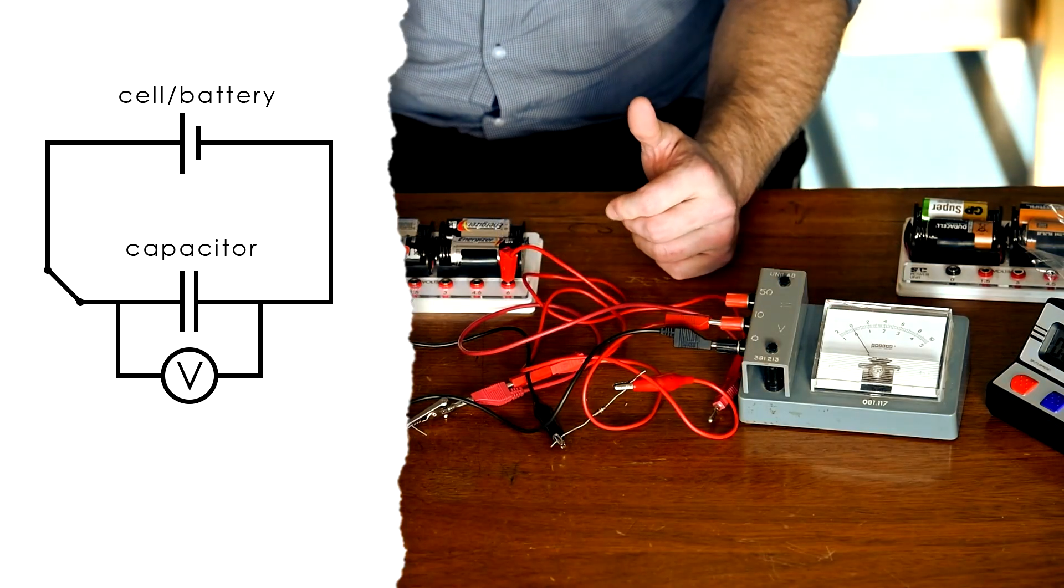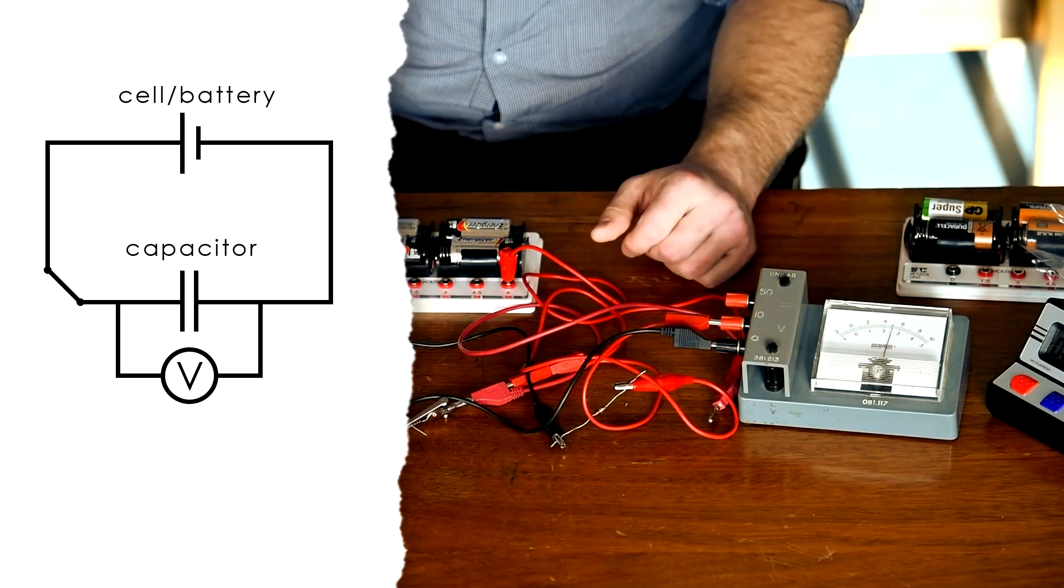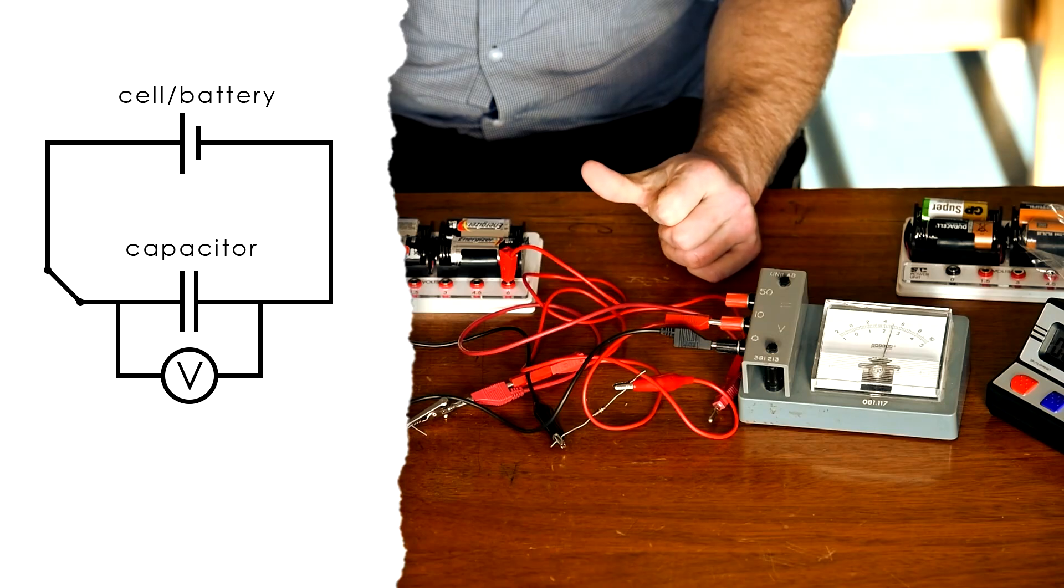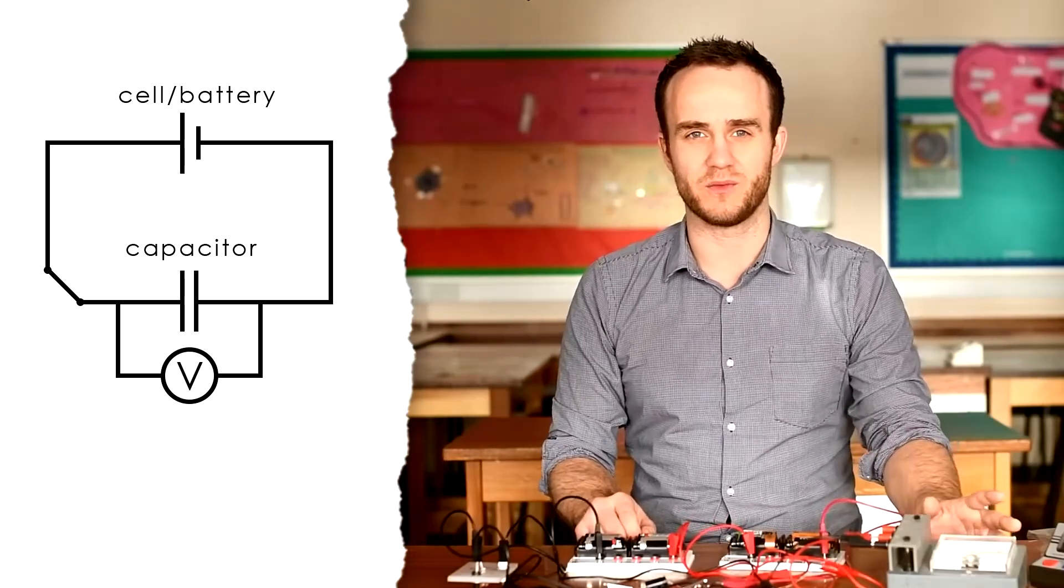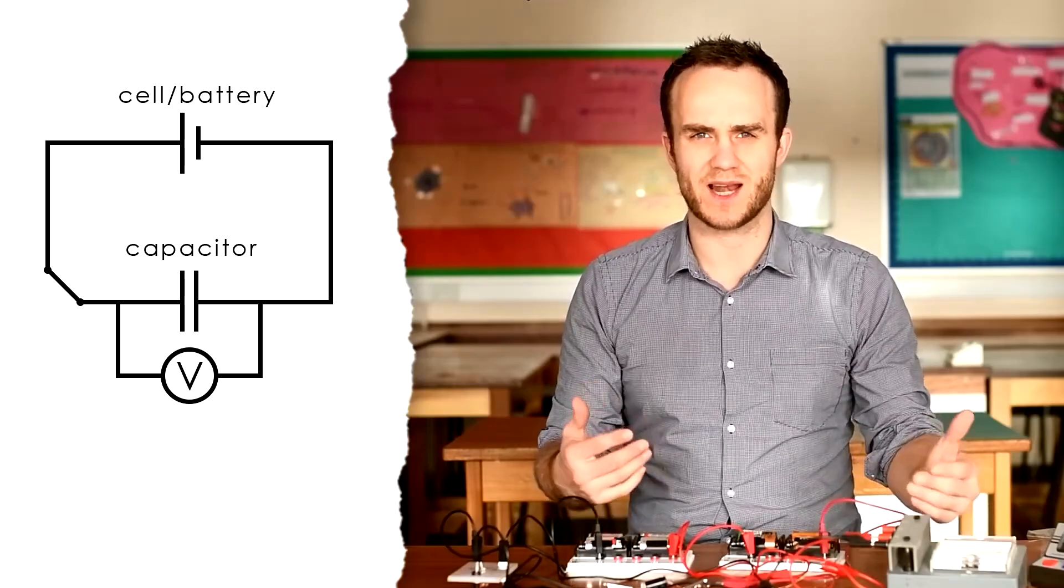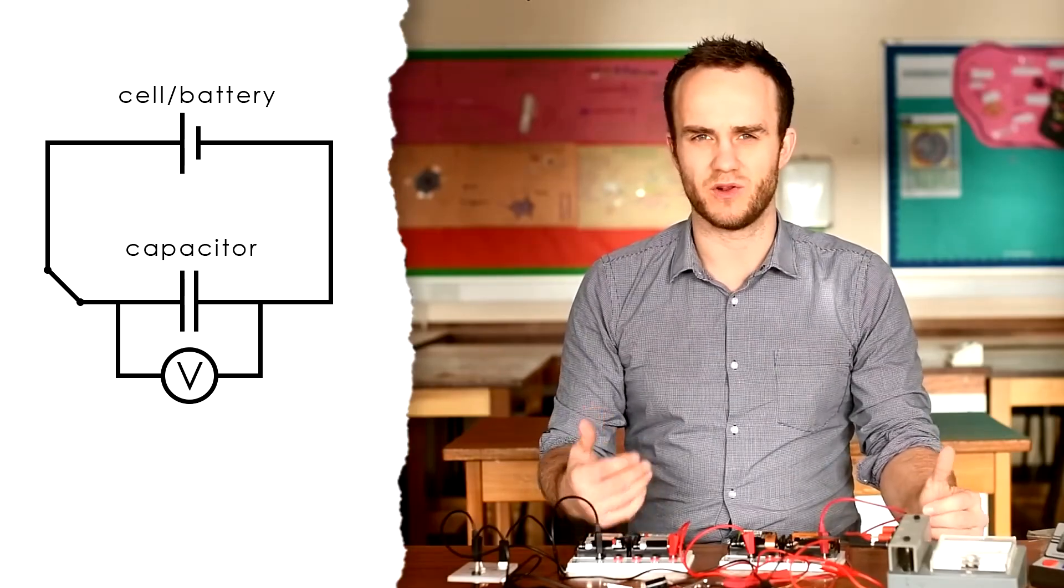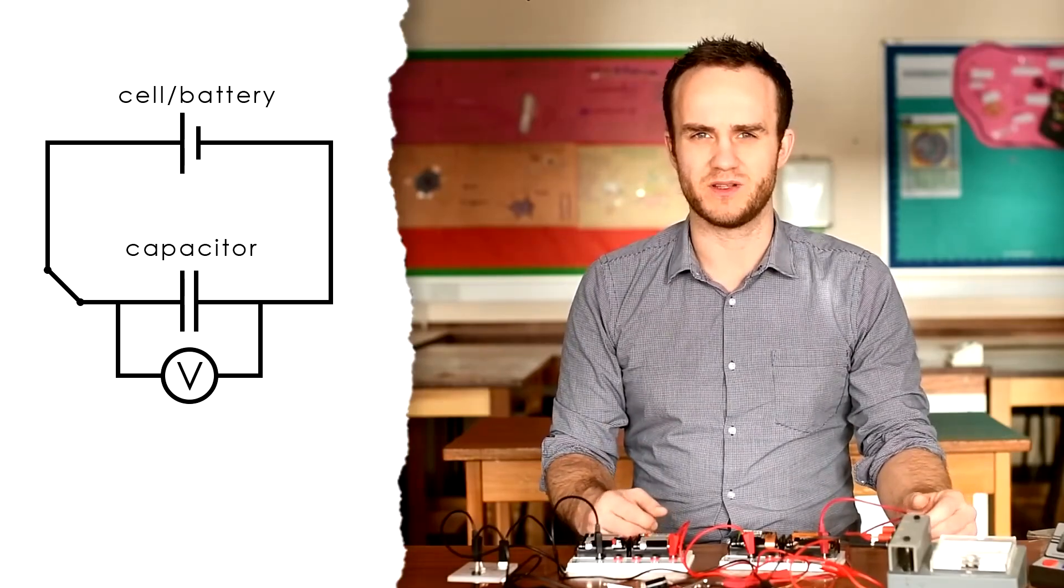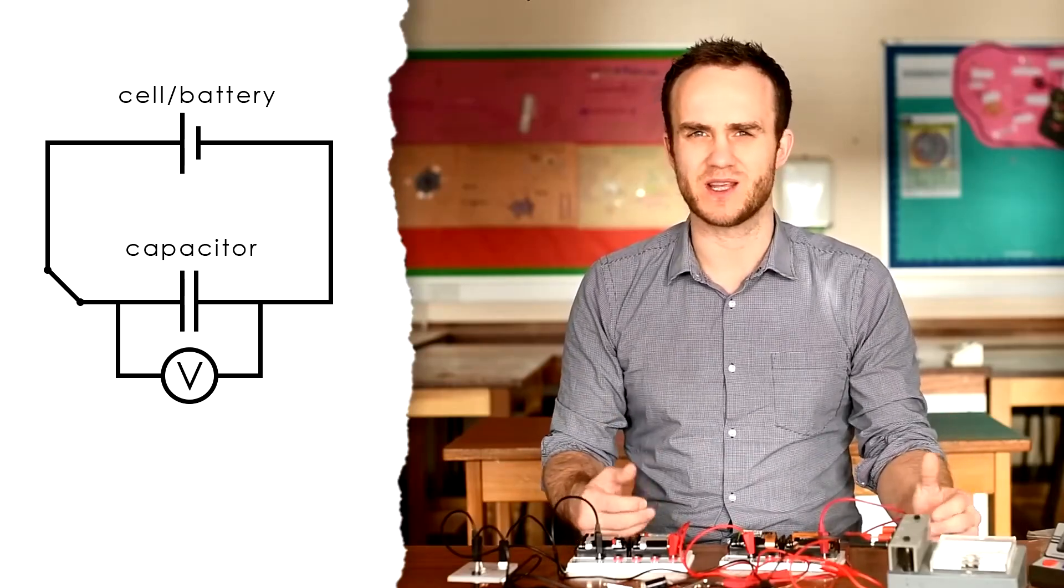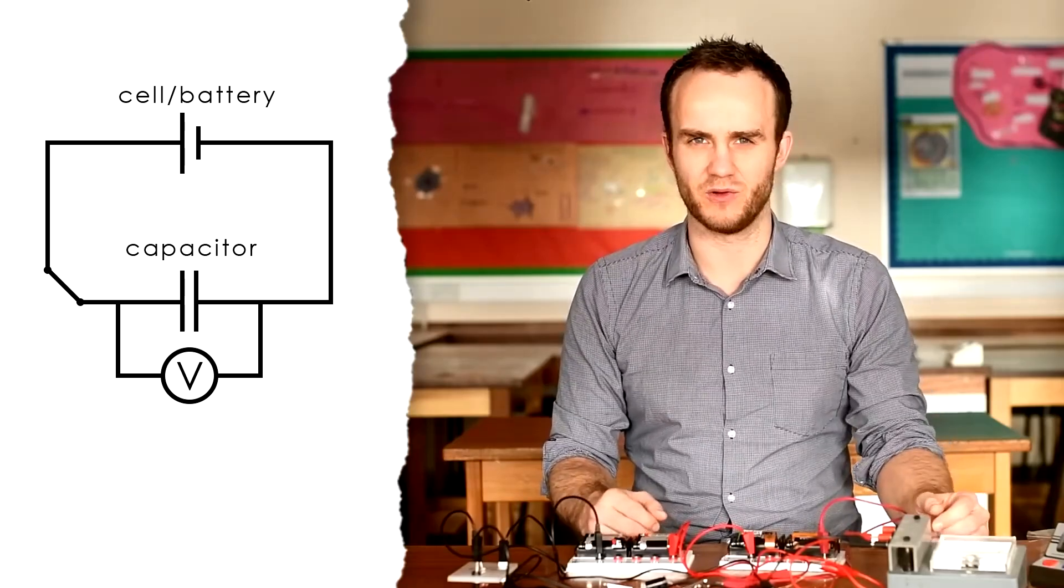If I connect my battery to my capacitor now, you might be able to see that we now have a PD of about 5 volts across my capacitor. Now I'm using an analog voltmeter instead of a multimeter today because it's much easier to see exactly when you have 1 volt, 2 volts, that kind of thing. Because when you use a digital voltmeter or a multimeter, it does have a refresh rate, which means that it updates the numbers every half a second or one second. That's not ideal for this. So an analog voltmeter is best.